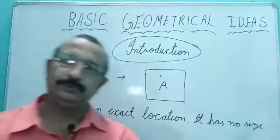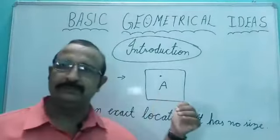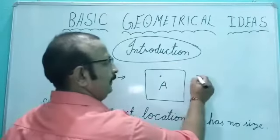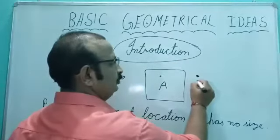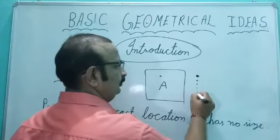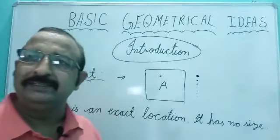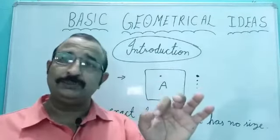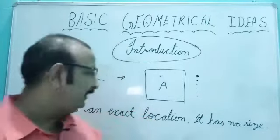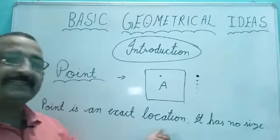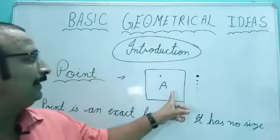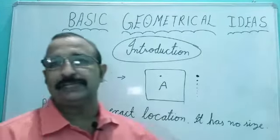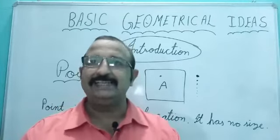First is the point. What is the point? Point is a location - ek jagah hai, ek spot hai. It can be large or small, but as it becomes smaller and smaller, micro - that is the point. It has no size, it has no shape. Point is an exact location. It has no size. Is it clear to all about point?